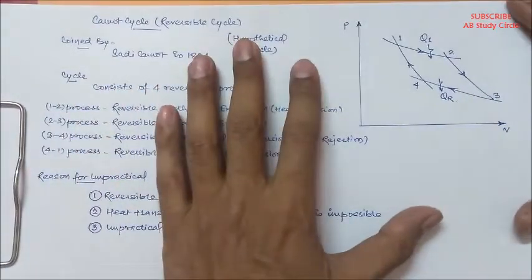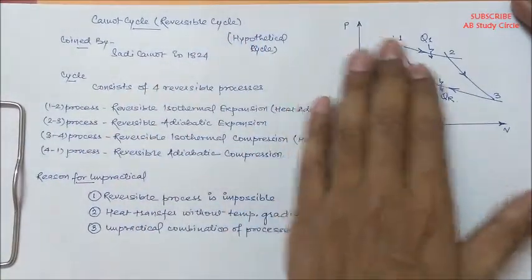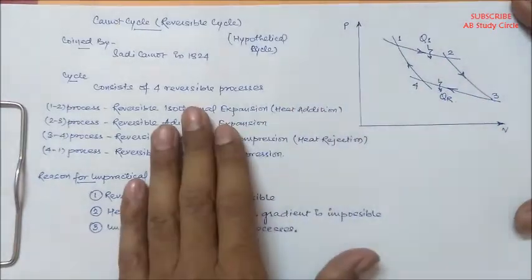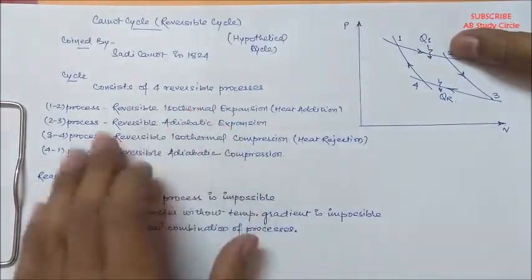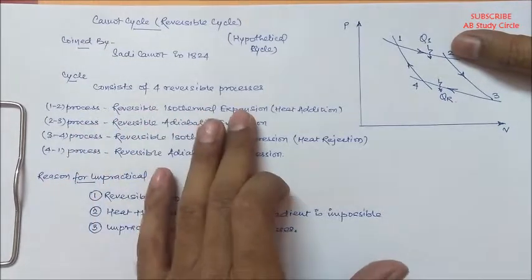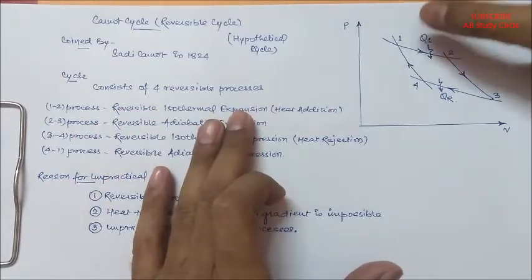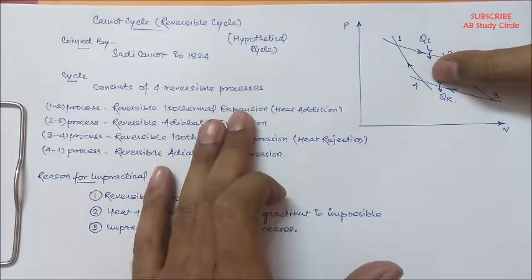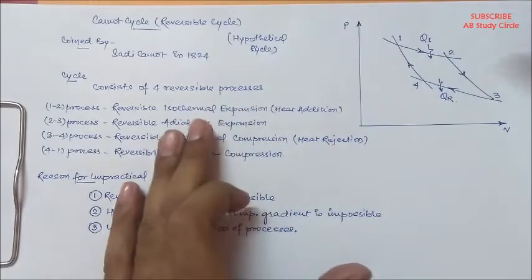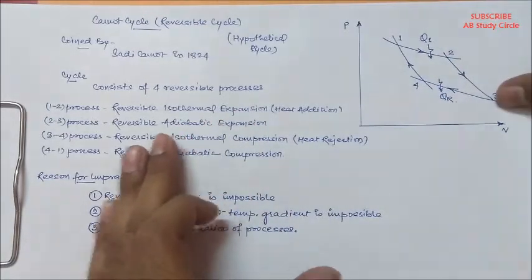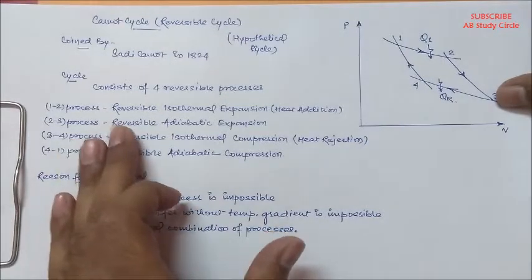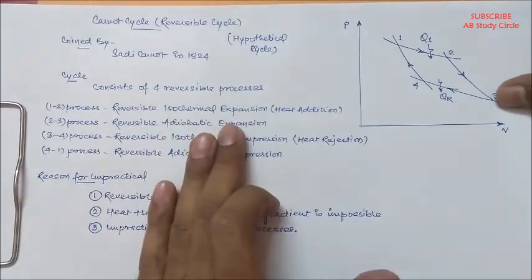You see four curves corresponding to four processes. One to two is a reversible isothermal expansion process where heat addition takes place. Then from two to three, it goes with a reversible adiabatic expansion process.